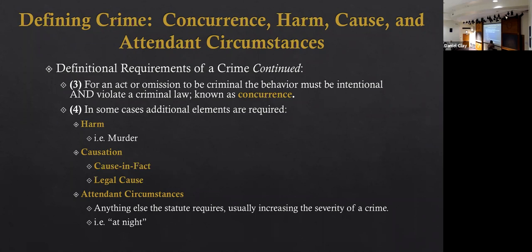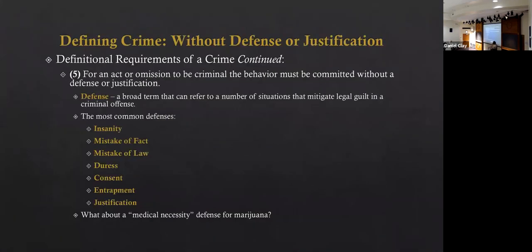What we ultimately come up with is an equation. Even if a prosecutor is able to prove actus reus, mens rea, causation, harm, and attendant circumstances, we're not done yet. We still have to visit the fifth element: for an act or omission to be criminal, the behavior must be committed without a defense or justification.